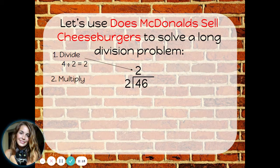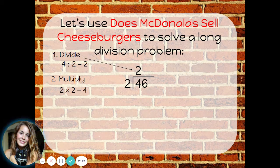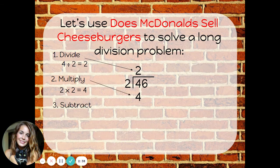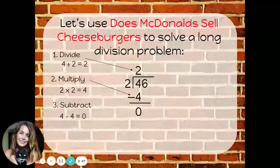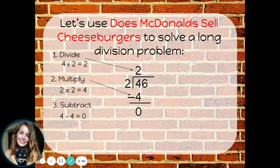Now I need to multiply — that's what McDonald's stands for. That number I just wrote, that number 2, I'm going to multiply it back times the divisor. 2 times 2 equals 4. Now I need to subtract. 4 minus 4 equals 0. Notice I haven't done anything with the 6 in 46 yet — we'll get to that soon. So we divided, we multiplied, we subtracted.